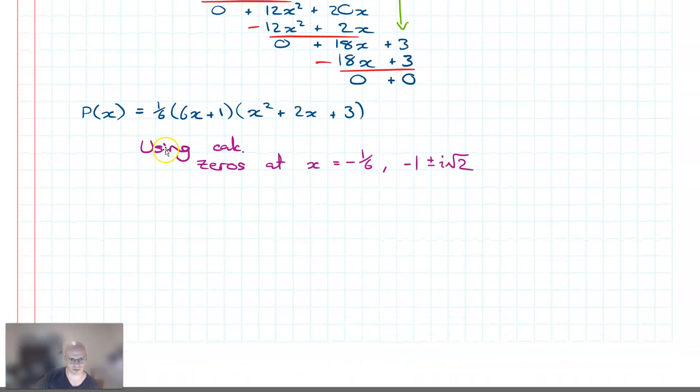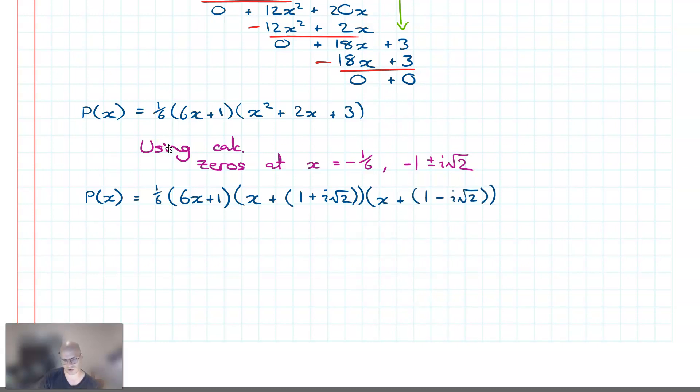Thus factorizing this, so putting it in factorized form, our P(x) is equal to 1/6, and thus the first one is going to be (x + 1), the second (x + 1 + i√2), and then (x + 1 - i√2). So here's our factorized form over here.